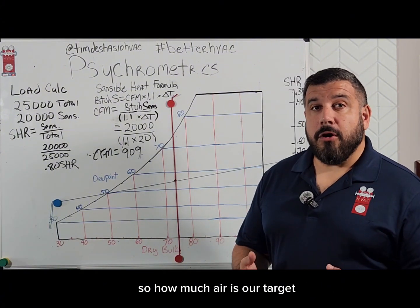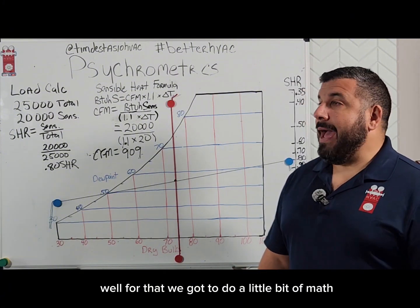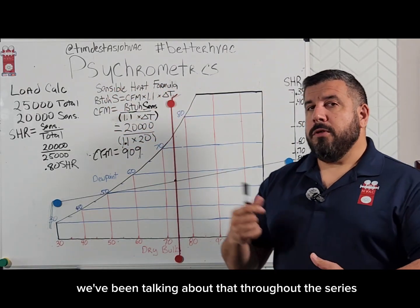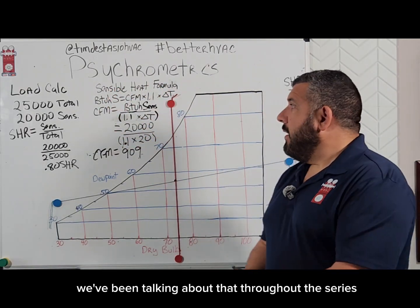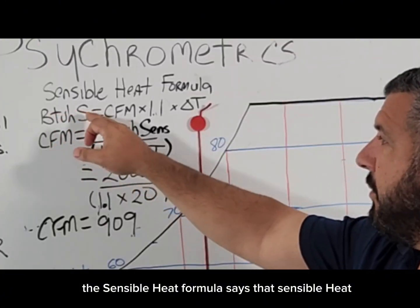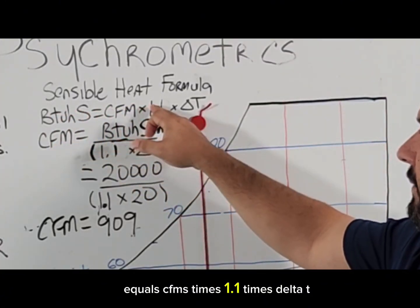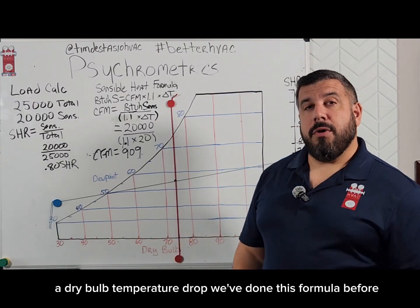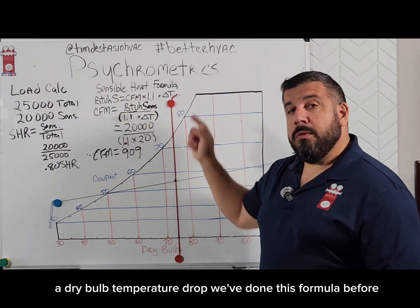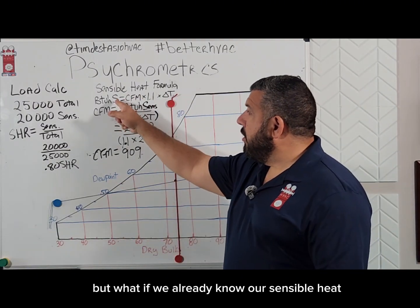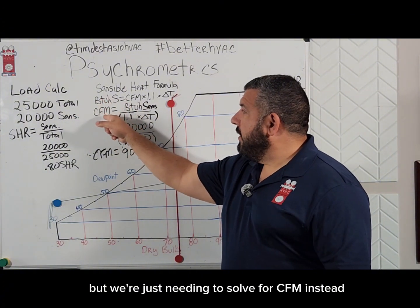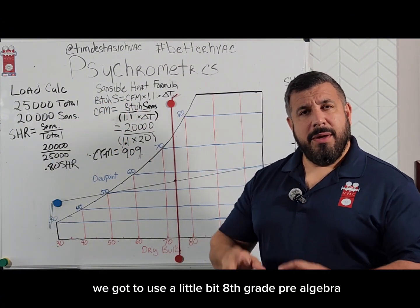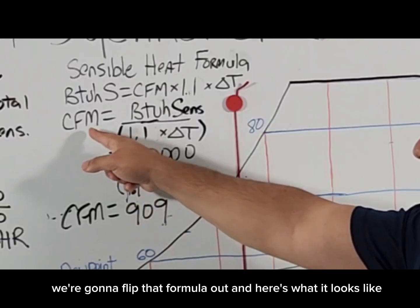So how much air is our target? We need to do a little math using the sensible heat formula we've discussed throughout this series. That formula says: sensible heat equals CFM times 1.1 times delta T (dry bulb temperature drop). But if we already know our sensible heat and need to solve for CFM instead, we use a little pre-algebra and flip the formula around.